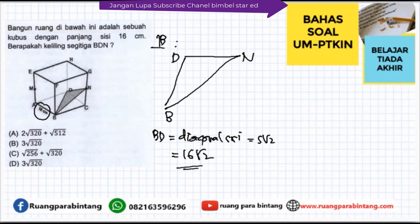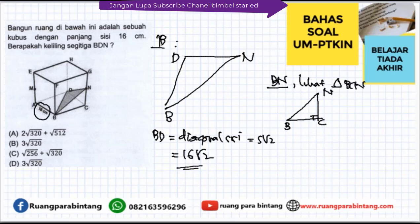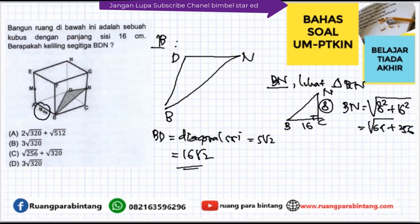Untuk mencari BN, kita gunakan segitiga siku-siku BCN, siku-siku di C. Titik N adalah titik tengah, sehingga CN = 8 dan BC = 16. Dengan Pitagoras: BN = akar dari (8² + 16²) = akar dari (64 + 256) = akar 320.